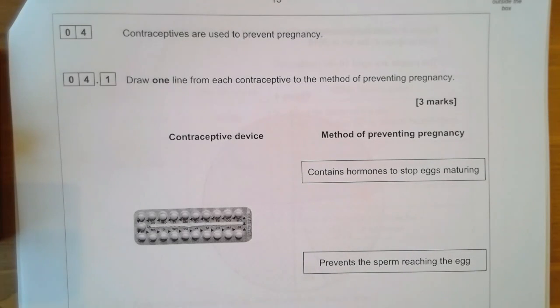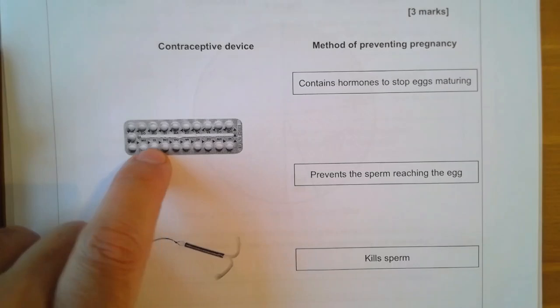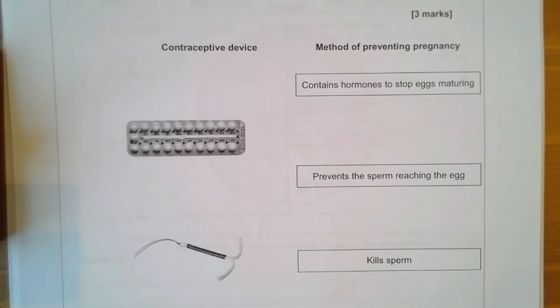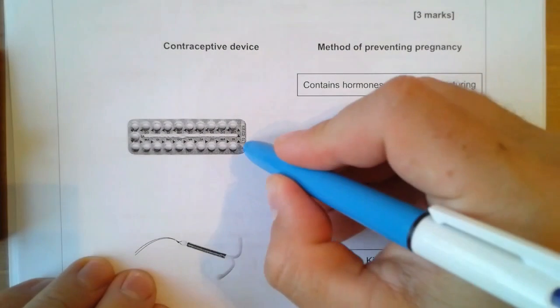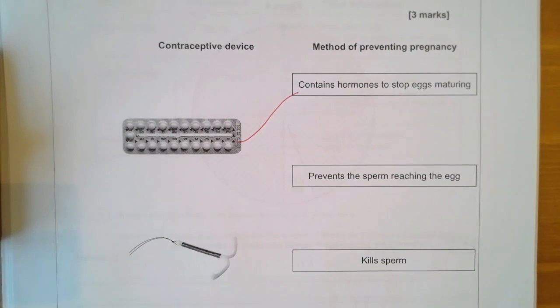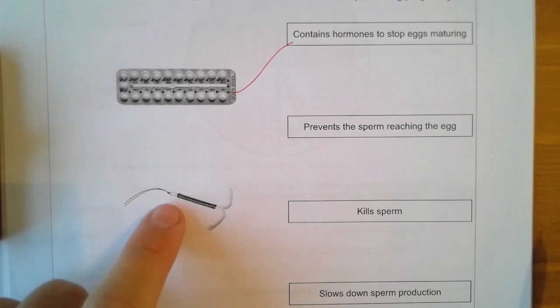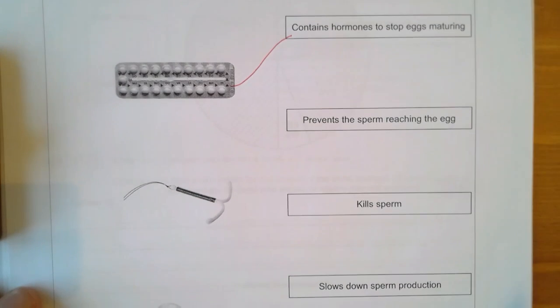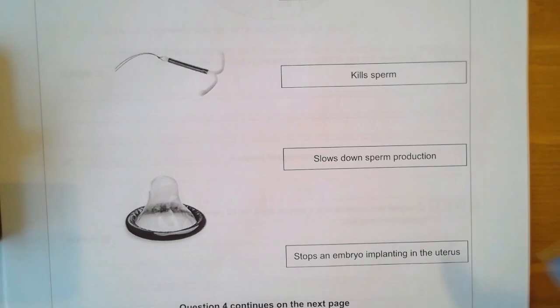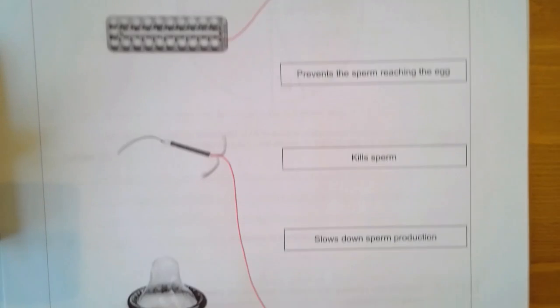Question four is about contraceptives used to prevent pregnancy. We have to match the device to how it stops you getting pregnant. The contraceptive pill contains hormones to stop eggs maturing. The implant also contains hormones to stop egg maturing but works in a slightly different way. The next method is an IUD or coil — it stops the embryo implanting into the uterus. Finally, a condom prevents the sperm reaching the egg in the first place.